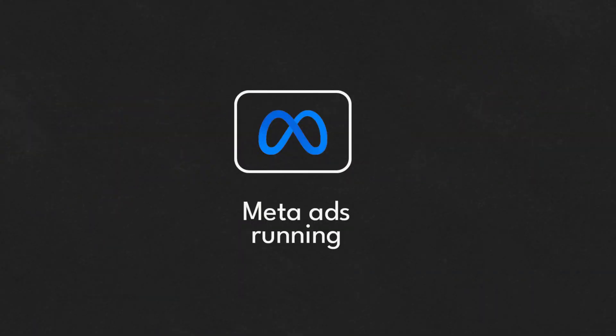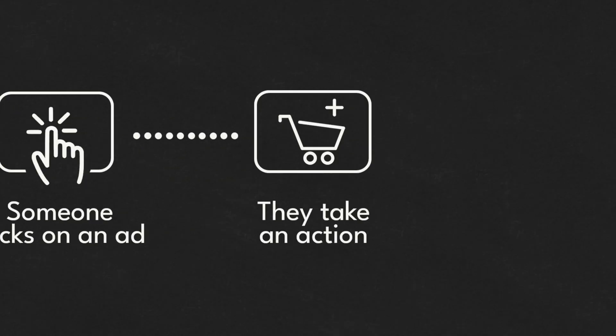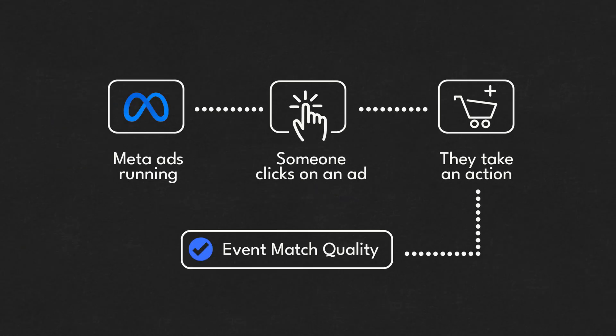Why is this important? Basically, if you don't have this in place, then Facebook is going to struggle to match the people they're sending from an ad. So when someone clicks on an ad, a little event happens and they can track that internally. But they also need to know whether that person has taken an action on your site — whether they've become a lead or made a purchase. That's all done through the Facebook pixel and conversions API setup.